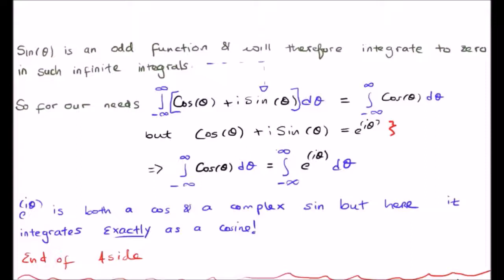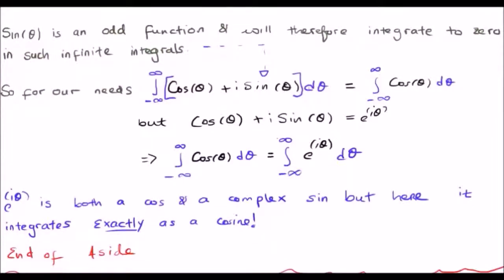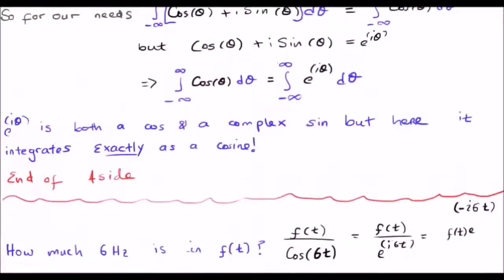However, inside the Fourier transform integrals, it integrates exactly as a cosine. So, now it's time to go back to our question. How many 6 Hertz signals are there in our function f of t?